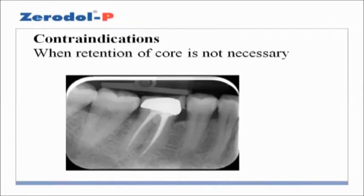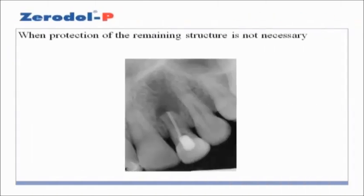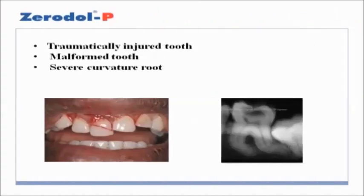Contraindications: a post should not be placed when retention of the core is not necessary and when protection of the remaining structure is not necessary. For example, anterior teeth with sound structure which need only resin or amalgam filling after root canal therapy. A post cannot be placed in a traumatically injured tooth, malformed tooth, severe curvature root, and in cases where there is a need for further retreatment.